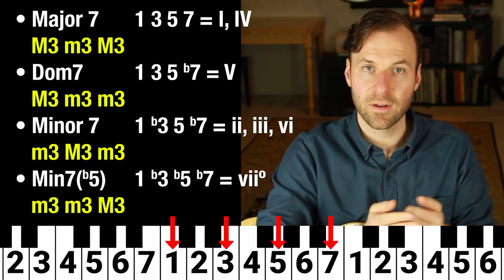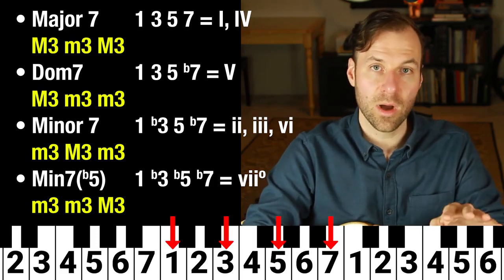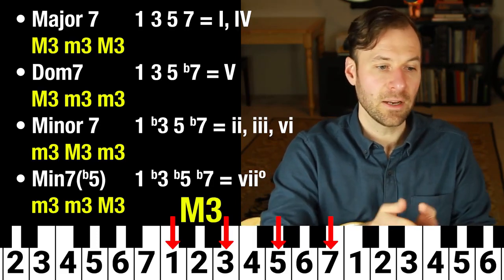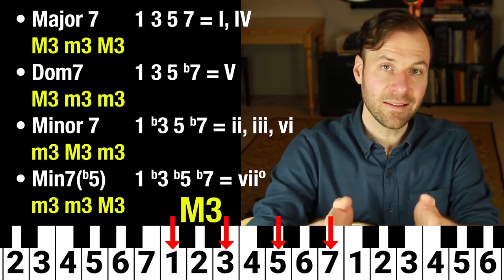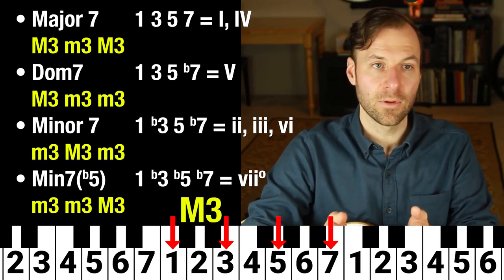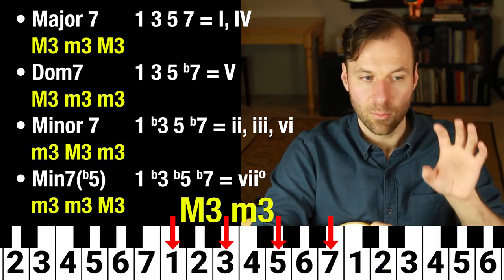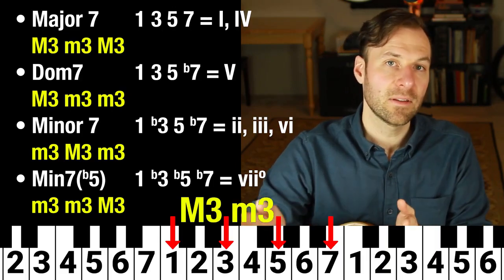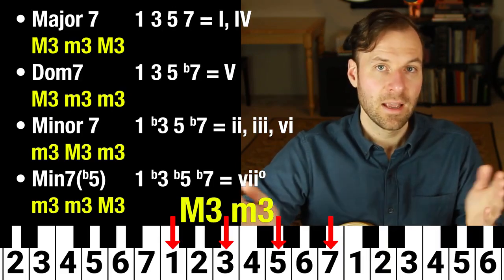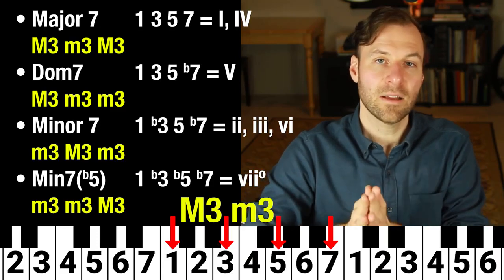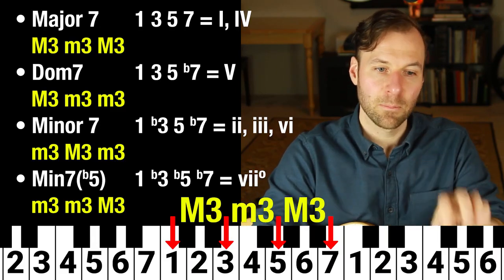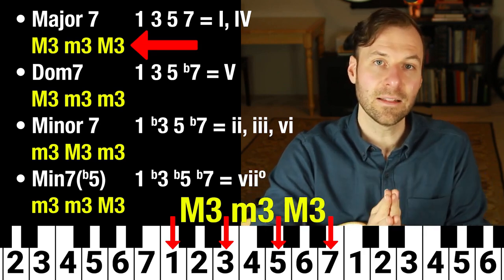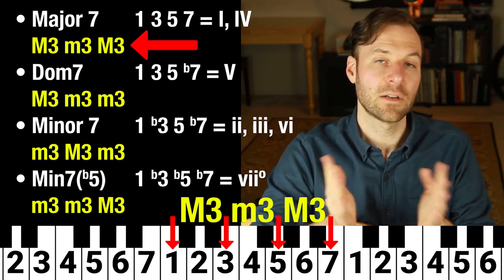Let's build the chords from the scale and confirm the third stacking. For the one chord, we take one, three, five, and seven. Between one and three, there is no half step — that's a major third. Between three and five, there is a half step — that's a minor third. Between five and seven, there is no half step — that's a major third. So we get major third, minor third, major third, which is indeed the structure of the major seven chord.